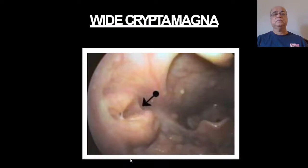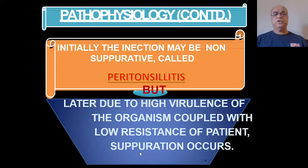On oropharyngeal examination, you can see the wide opening of the crypta magna in the upper part of the palatine tonsil. Initially the infection may be non-suppurative — as with any inflammatory process, it may be at the catarrhal stage, then pre-suppuration stage, and later at the suppurative stage.